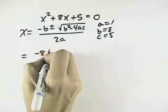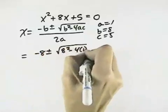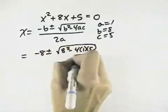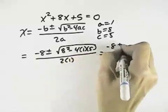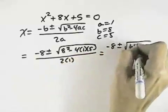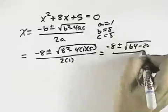So x will equal negative 8 plus or minus square root of 8 squared minus 4 times 1 times 5 all over 2 times 1. Or negative 8 plus or minus the square root of 64 minus 4 times 5 is 20 all over 2.